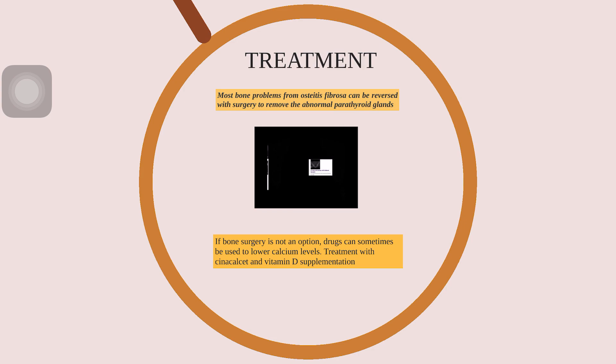Treatment: most bone problems from Osteitis Fibrosa can be reversed with surgery to remove the abnormal parathyroid glands. If surgery is not an option, drugs can sometimes be used to lower calcium levels — for example, treatment with Cinacalcet and vitamin D supplementation.